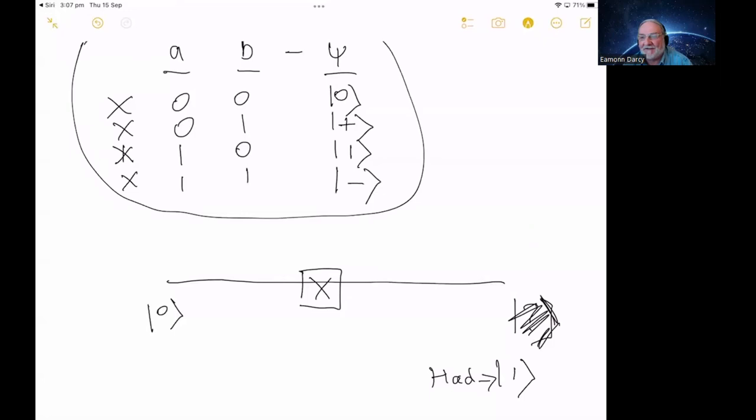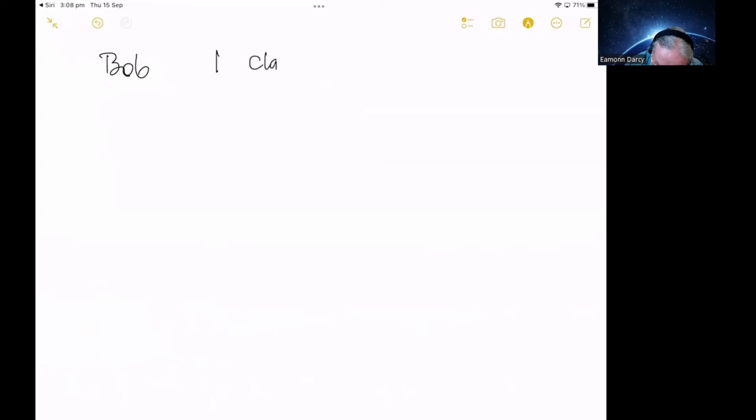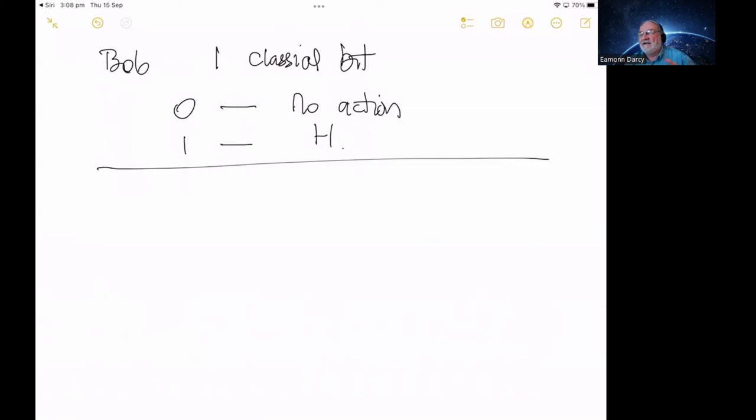But look, Bob also, he has one classical bit and he will then make a decision how to apply to Alice's qubit. So with the one classical bit, if he gets a zero, then he takes no action. And if he takes a one, he executes a Hadamard gate. Now that really is all you need to know. But what does this give us? Now we have three different flips of a classical bit, which we can call A, B, and C, C being Bob's. And now we can work out the state of the qubit after all of these.